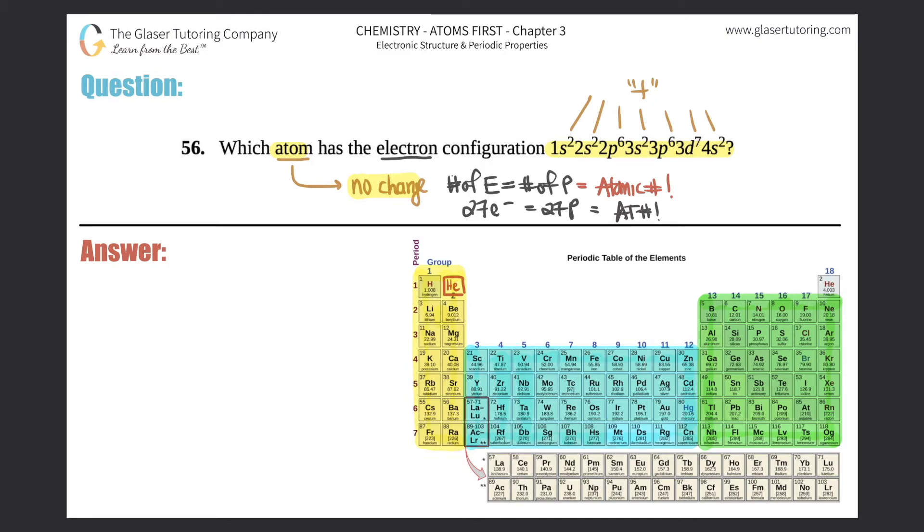All you got to look for is number 27 on the periodic table, and that is cobalt. So the answer here is cobalt, or if you just want to give the symbol, it is Co.